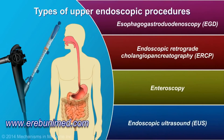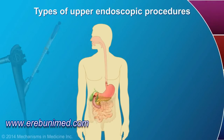Endoscopic ultrasound, or EUS, combines endoscopy with ultrasound, or echoendoscopy, to obtain detailed images of the digestive tract, including the pancreas and surrounding abdominal organs.